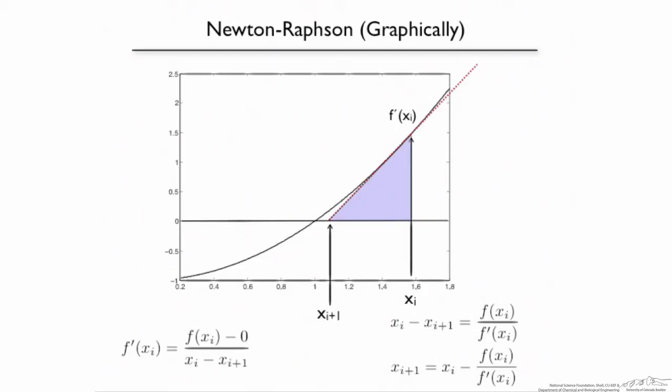Now there's some issues with this. For example, if the slope is 0 at that point, then the denominator is 0 and it blows up. In fact, if the slope is very flat, we actually can have some real problems, because it might send us off in a very wrong direction. But if we're near the root, and the root isn't exactly flat, then this can converge very quickly.